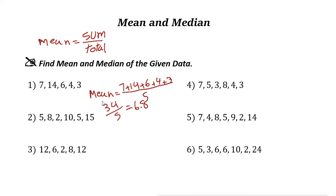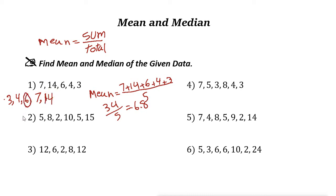To find the median, first write the numbers in order from smallest to greatest. The numbers are: 3, 4, 6, 7, 14. The number in the middle is 6, so the median of these five numbers is 6.